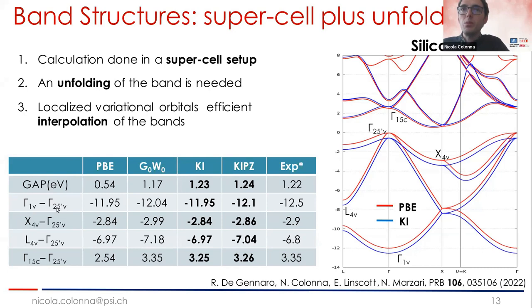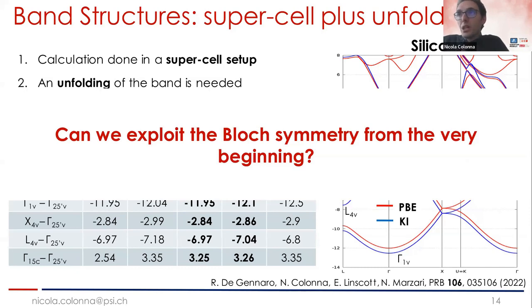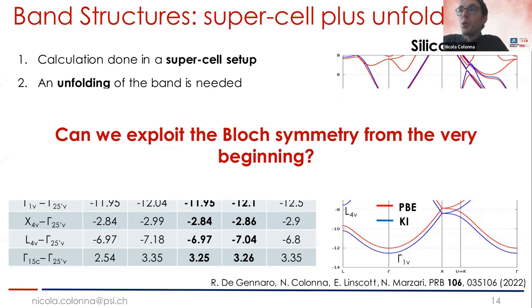Once you prove Bloch symmetry compliance, you have an underlying Bloch band structure for the system, and it's just a matter of extracting it. We showed with Ricardo that once you're sure you have an underlying band structure, you can recover it with an unfolding technique — which Edward also discussed during the school. So the idea is you do your Koopmans calculation in a supercell and then unfold it, giving access to the entire band structure of the material.